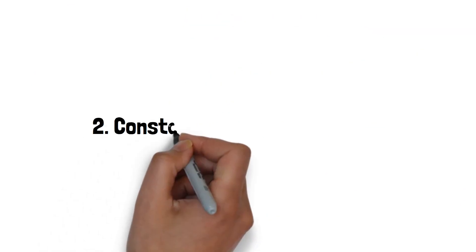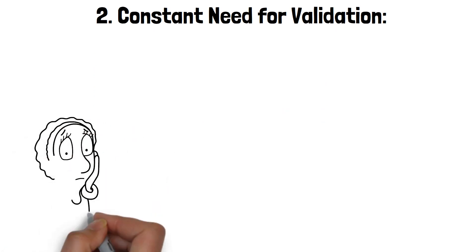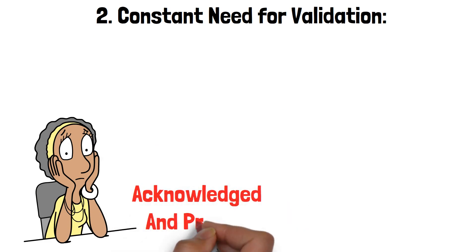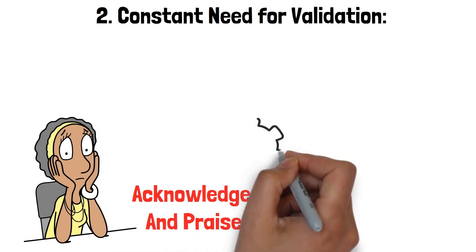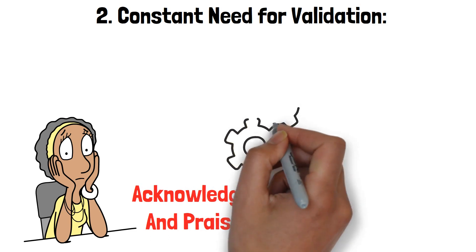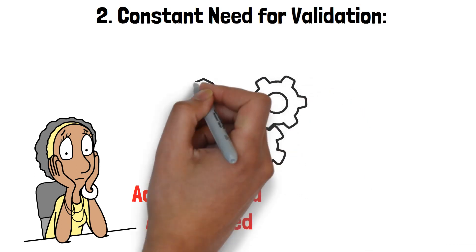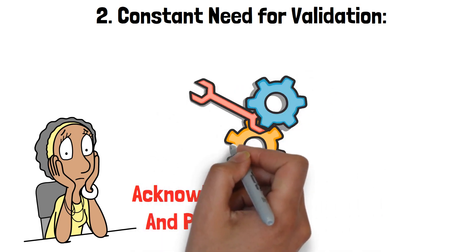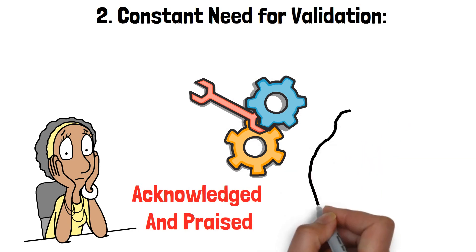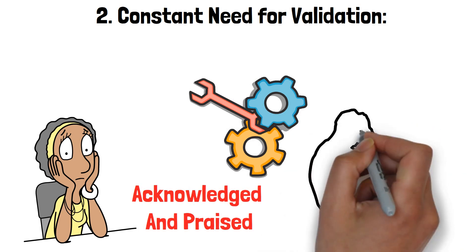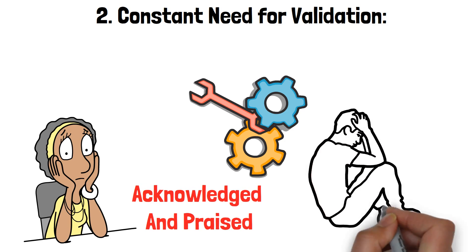2. Constant need for validation. Compliments are like fuel for your narcissistic wife's emotional engine. She thrives on being acknowledged and praised. It's not just occasional appreciation. It's a continuous hunger for validation. From her appearance to her accomplishments, she seeks approval at every turn. This can be exhausting and, at times, feel like an emotional demand.